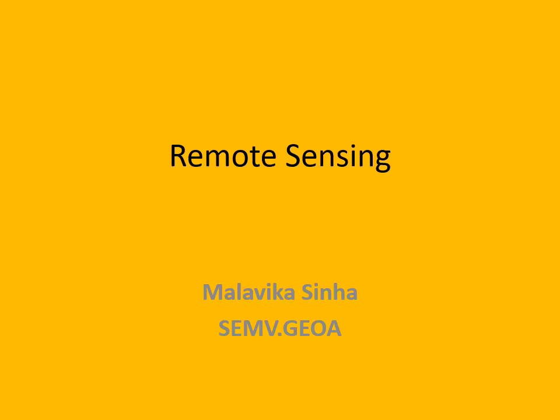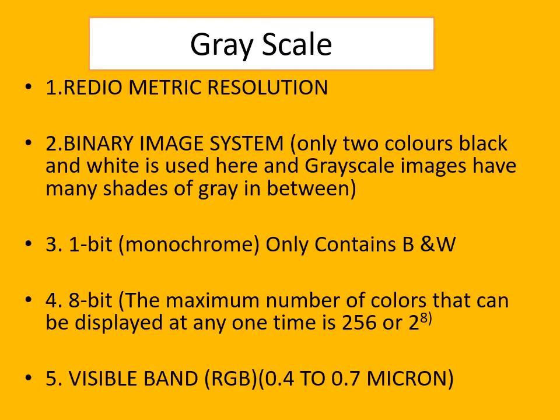We will discuss a few important attributes and definitions of remote sensing. Grayscale is related to radiometric resolution. It is normally related to the binary image system, which contains only two colors: black or white. It is used in an image system to represent various steps from black to white or white to black. It is a 1-bit image, and the digital number or DN value of grayscale normally varies from 0 to 256.